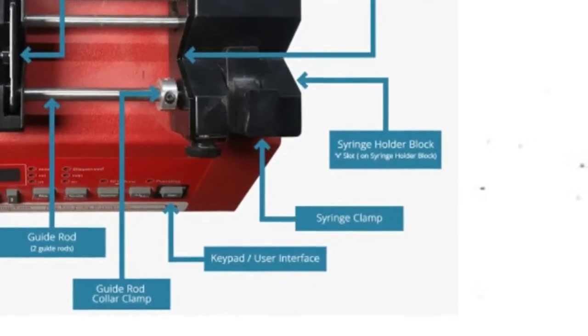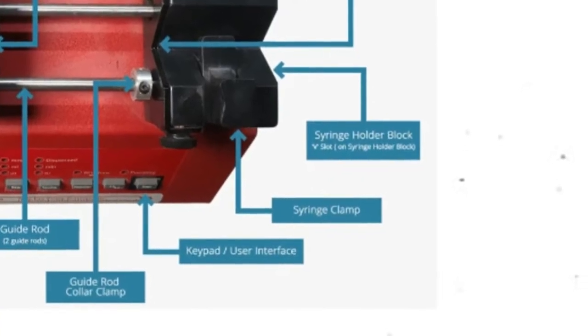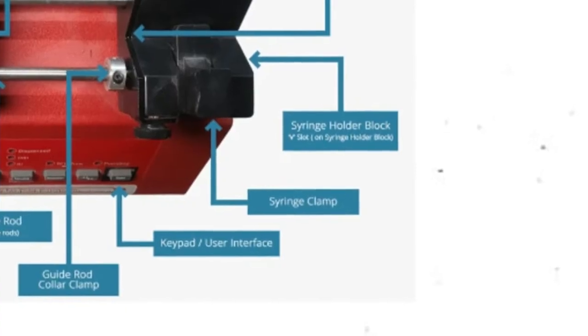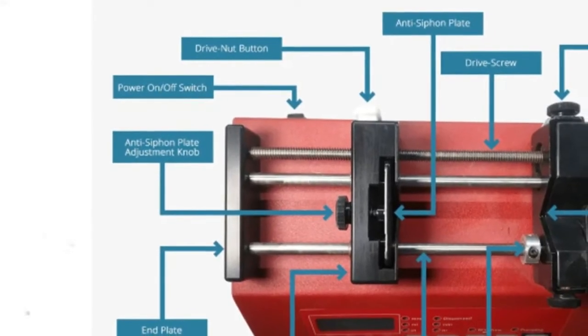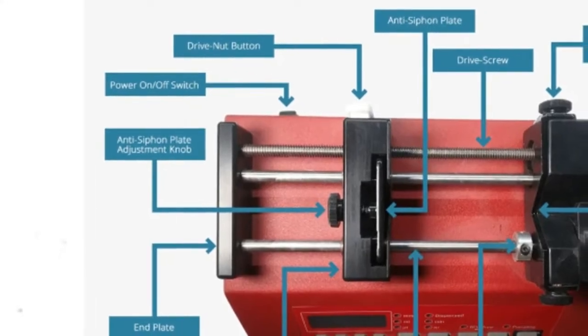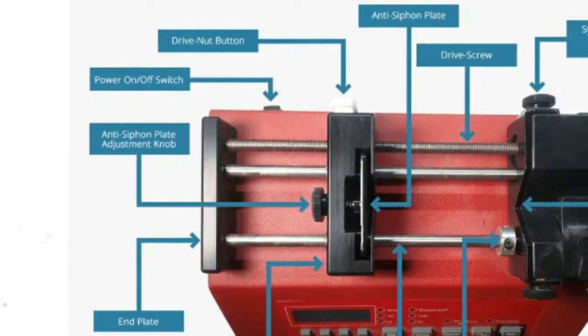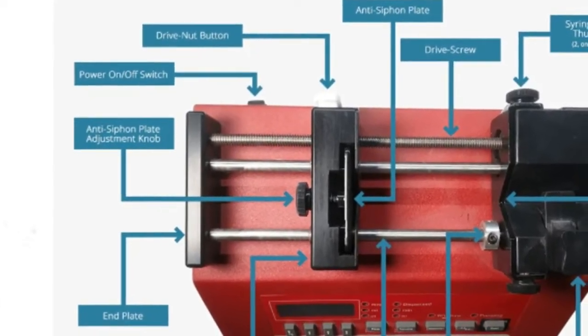The seventh component is a syringe holder block. This block features a large V-shaped recess where a syringe barrel may be rested and supported. The eighth component is a syringe retainer bracket. This syringe retainer bracket is used to hold the syringe barrel flange securely to prevent the barrel from moving backwards and forward whilst pumping. This increases repeatability and accuracy of the pump.